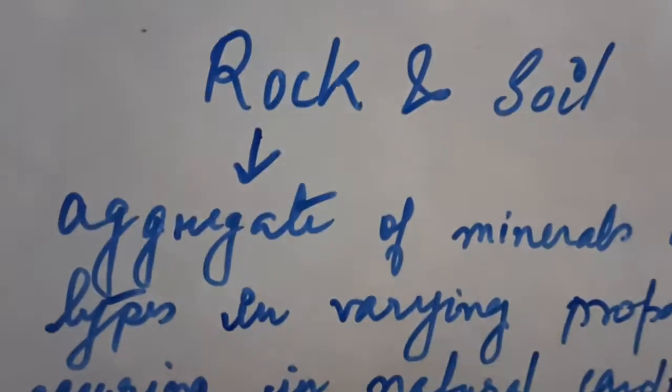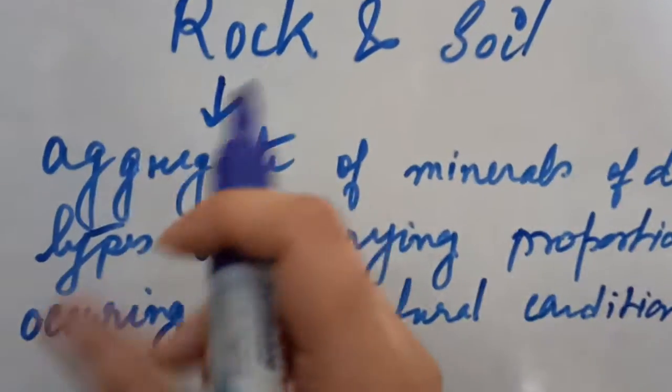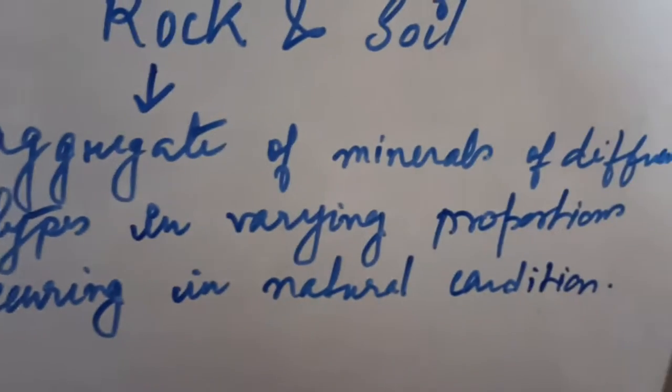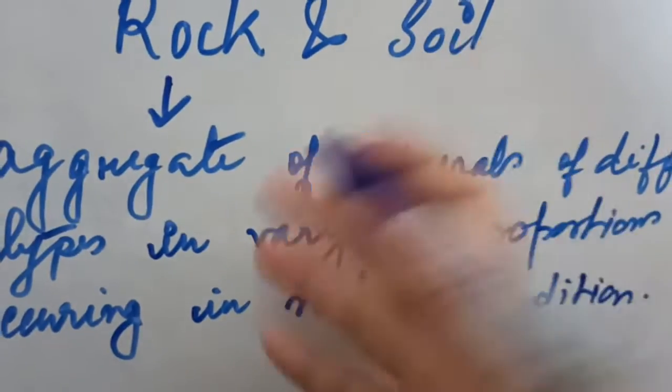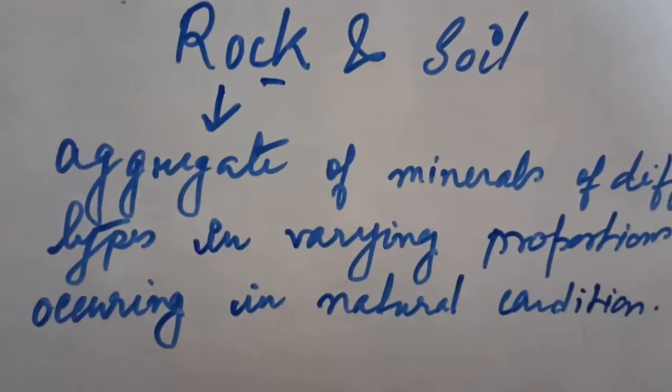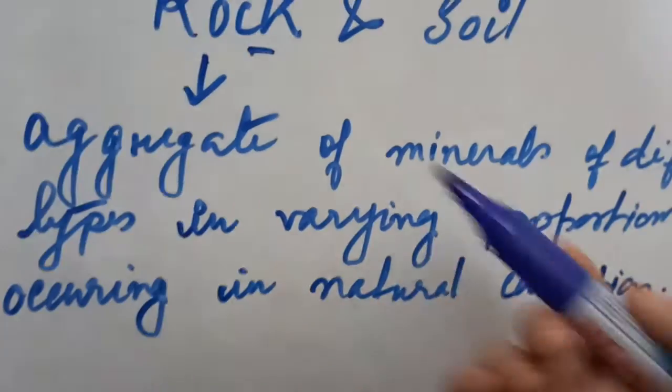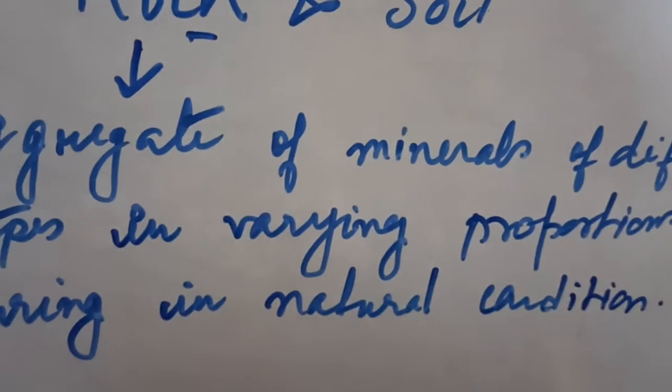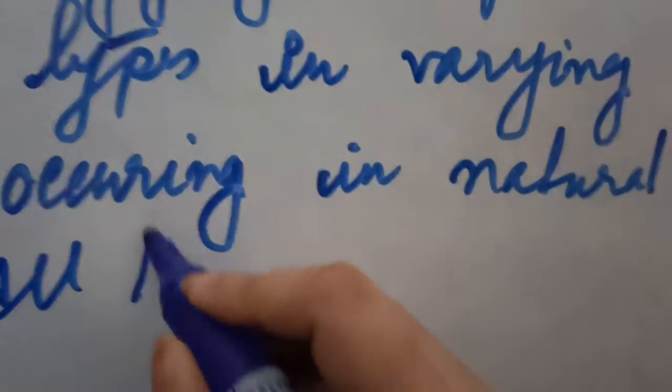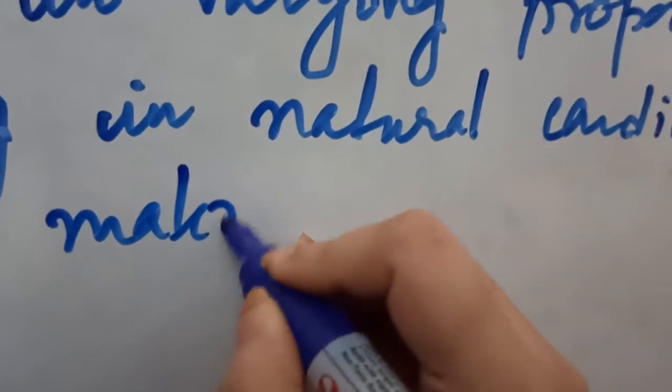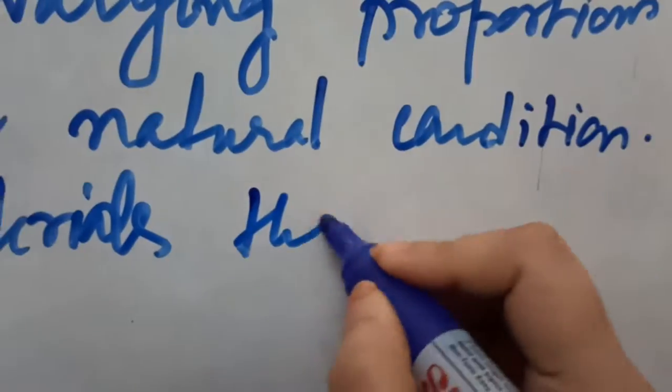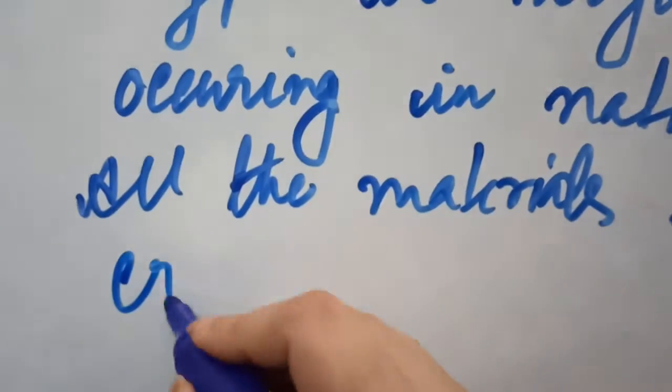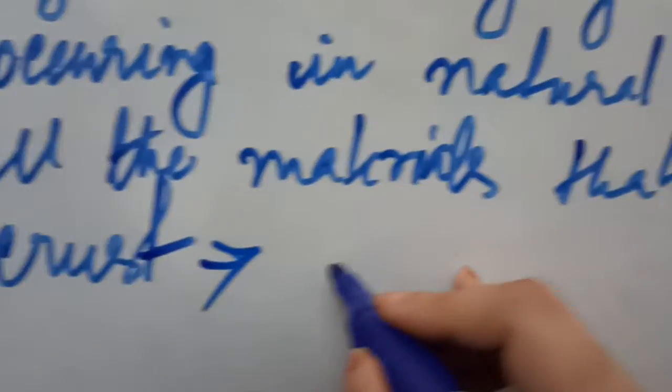So what is a rock? Rock is actually an aggregate of minerals. Aggregate means it is a composition of different kinds of minerals that are present and form one rock. These minerals we can get naturally, and all the materials that make earth's crust we call the rock.